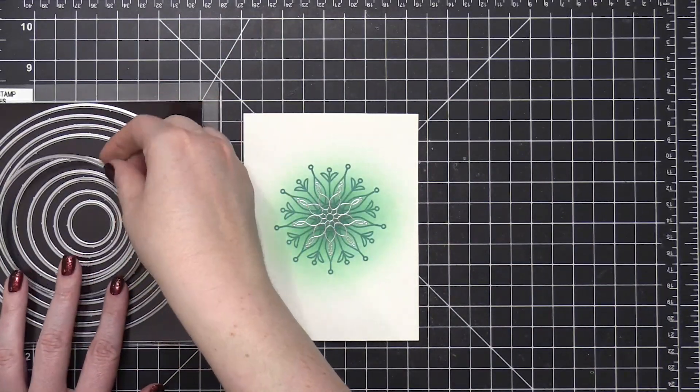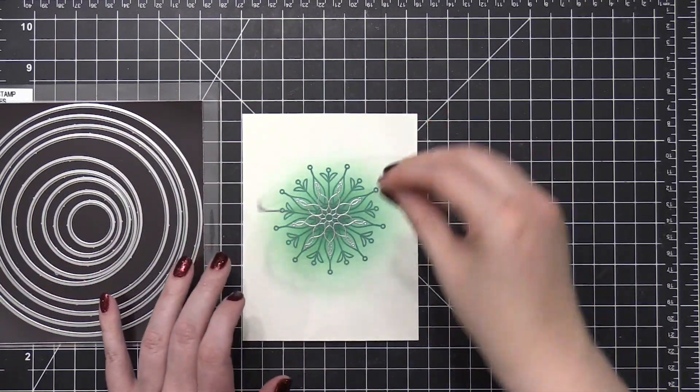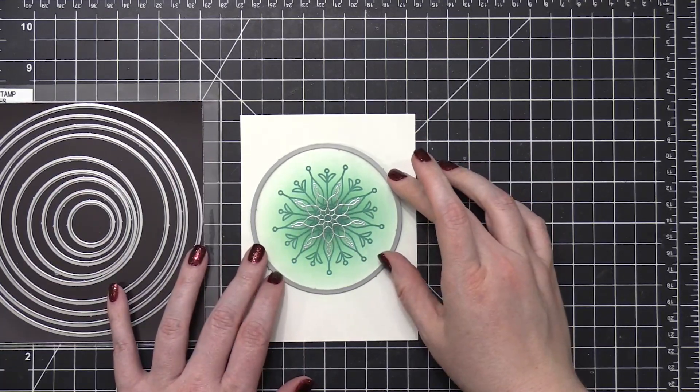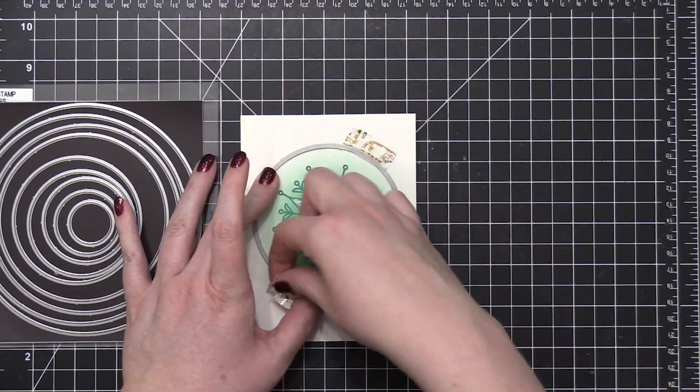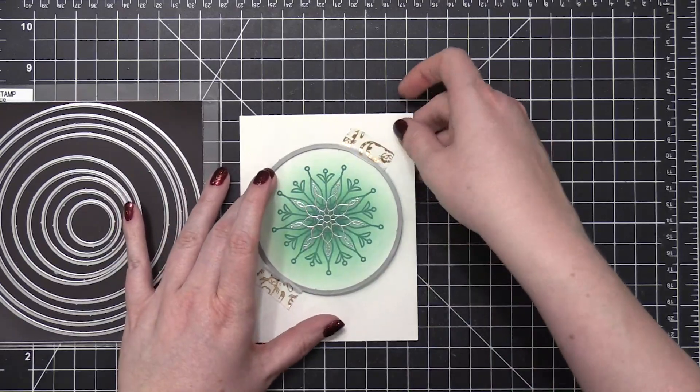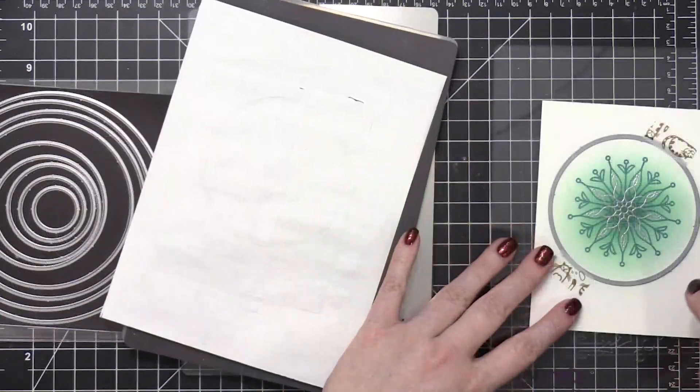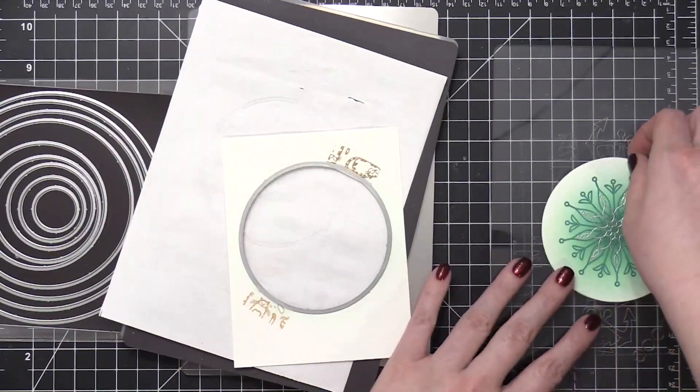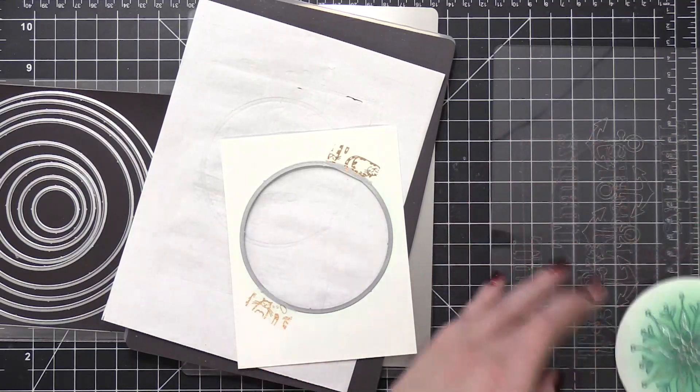I thought this large snowflake just lent itself to a circle card perfectly. So I grabbed some nested circle dies from Simon, held that in place with some washi tape, and then ran that through my Gemini Junior die cutting machine. I also used those same dies to prepare a circle card base.